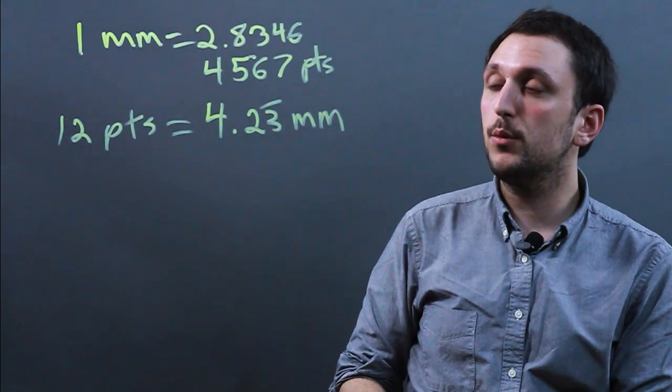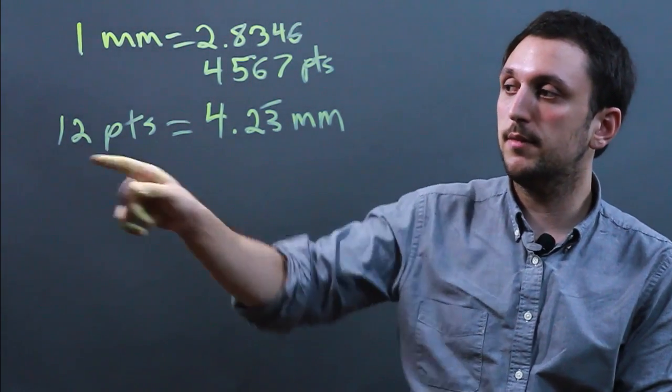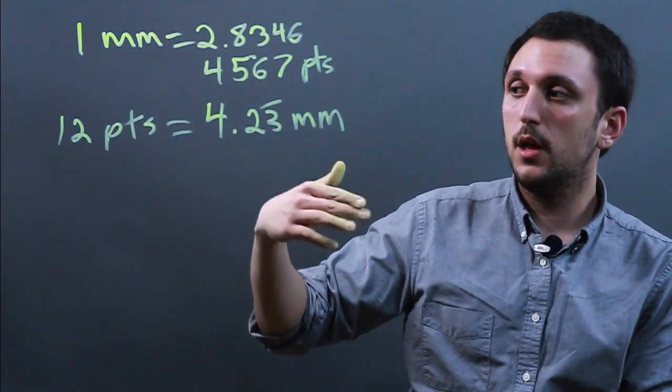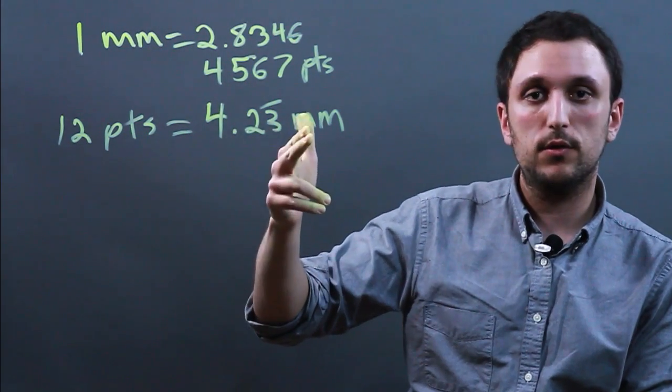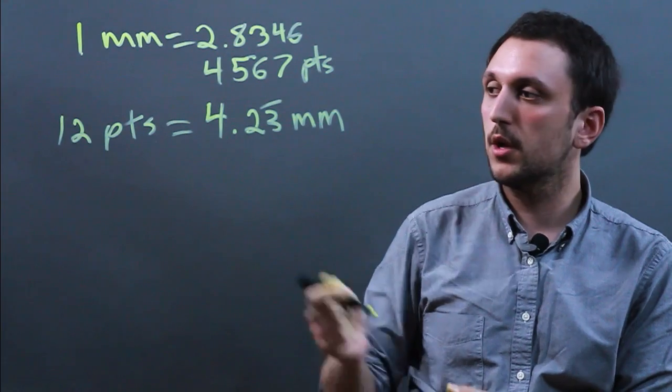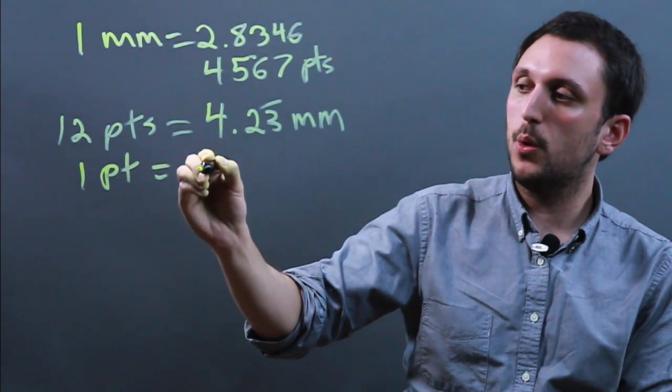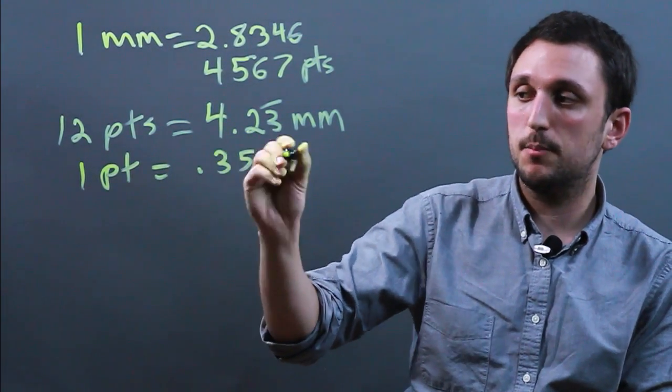And if you need to figure that out, you can basically divide this by 12 and divide this by 12, and then that equals a very small number of millimeters. Roughly, 1 point equals 0.35-ish millimeters.